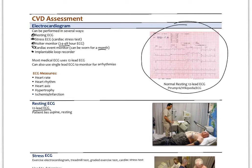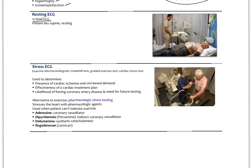There are also implantable ECGs. Most ECGs are 12-lead devices, but we can use a single-lead ECG — like on your iPhone — to give a sense of whether you're having a certain arrhythmia like atrial fibrillation. The ECG measures heart rate, heart rhythm, the axis of the heart, ventricular hypertrophy, and the presence of ischemia or infarction. A single-lead ECG gives mainly the first two, so we don't get all the other information.